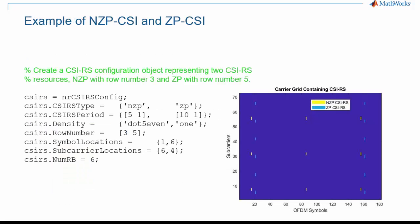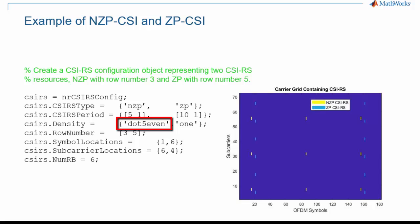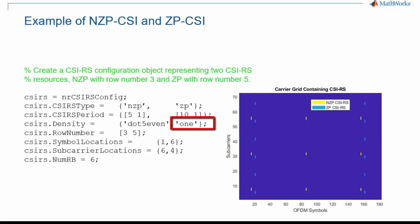This is an example of non-zero-power and zero-power CSI-RS, and how you can set them up with MathWorks 5G Toolbox. The non-zero-power CSI-RS have a period of 5 slots with offset 1, meaning they are present in slots 1, 6, 11, and so forth. They have a density of 0.5, meaning they are present in every other resource block, and they are located in symbol 1 of the slot — shown in yellow. The zero-power CSI-RS have a period of 10 slots with offset 1, meaning they are present in slots 1, 11, 21, and so forth. They have a frequency density of 1, which means they are in every resource block, and the symbol location is 6, as shown in blue.